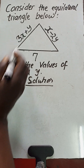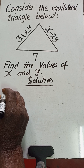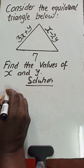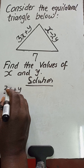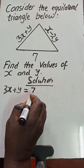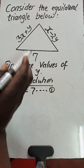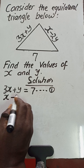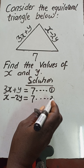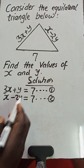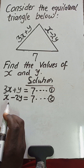Let's go ahead. We'll say this side is equal to 7, so we write: 3x plus y is equal to 7. We'll call that Equation 1. Then the other side: x minus 2y is also equal to 7. We'll call that Equation 2. All of these have been formed thanks to the fact that the sides of an equilateral triangle are equal.